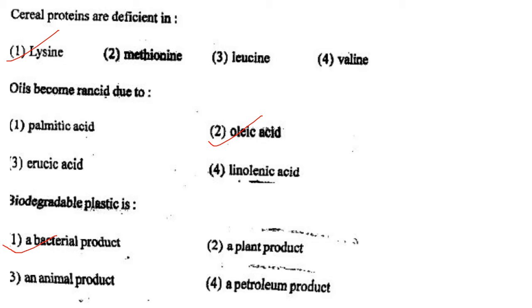Next one: Cereal proteins are deficient in option 1, lysine; option 2, methionine; option 3, leucine; option 4, valine. Answer is option 1: lysine.